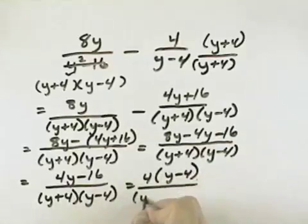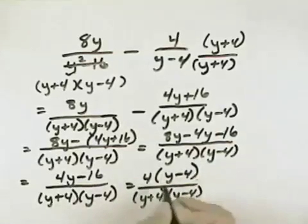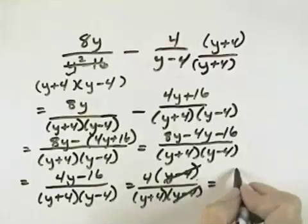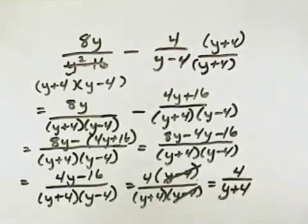Over our common denominator of y plus 4 times y minus 4, noticing the common factor of y minus 4, we can cancel that common factor, leaving a 4 on top and a y plus 4 in the denominator.